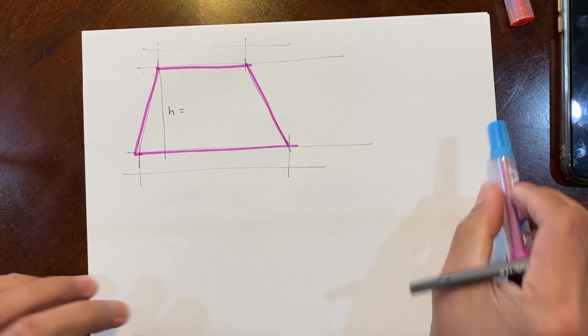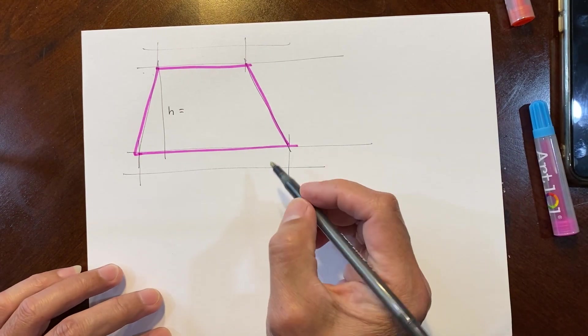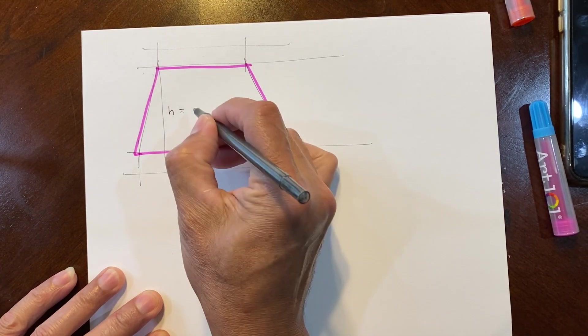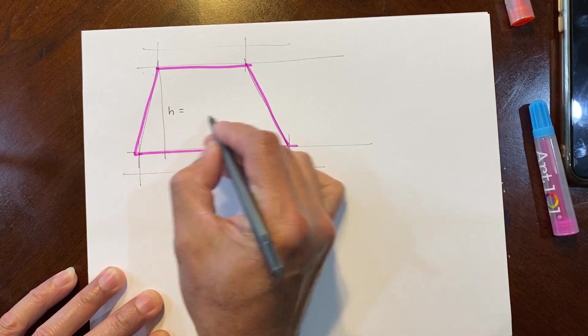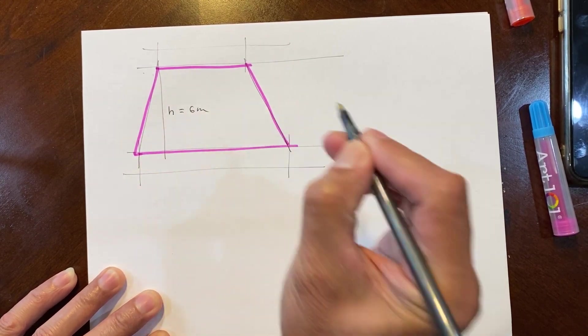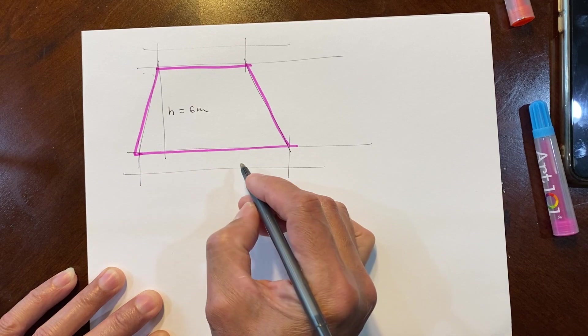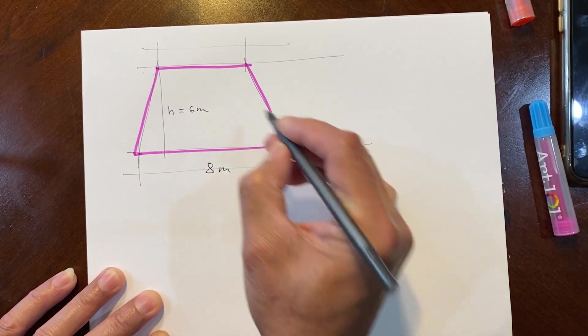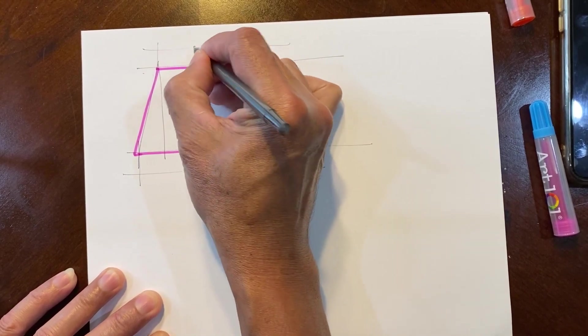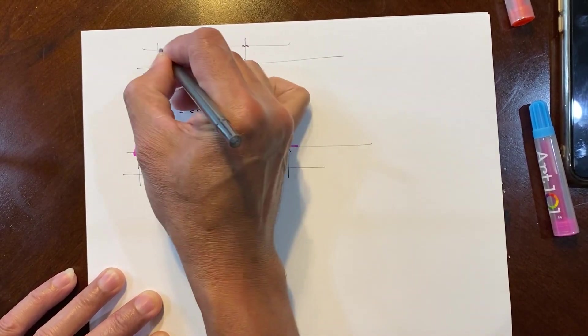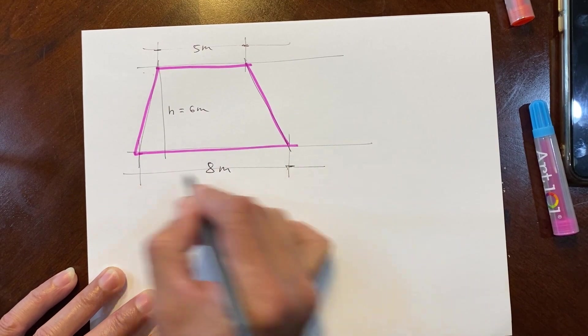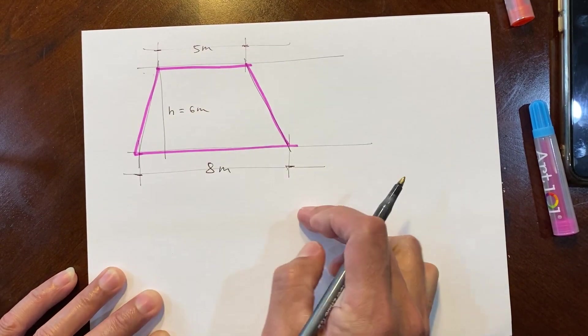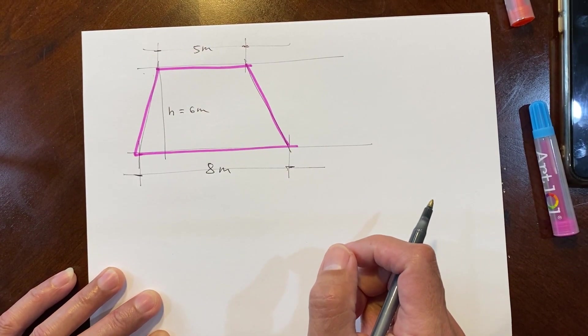Now we're gonna assume the height. Let's say height is 6 meters, and this one is 8 meters, and this one right here is 5 meters. So we got everything, we got the height and two sides parallel, 5 and 8 meters.